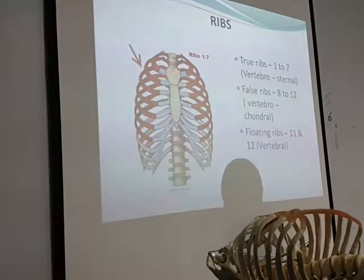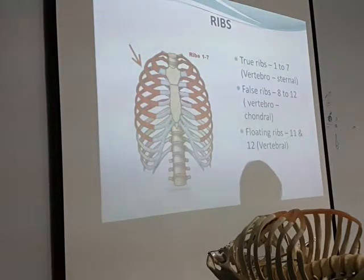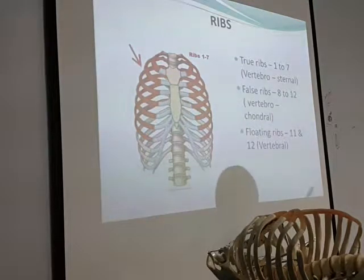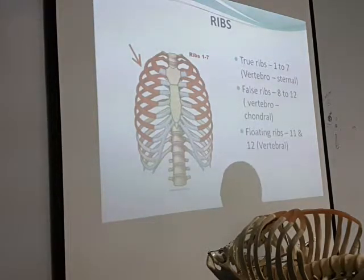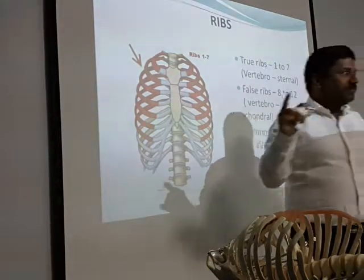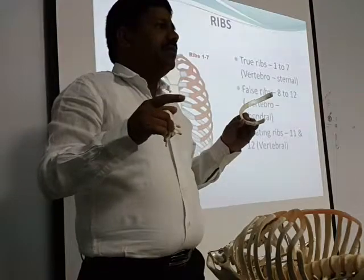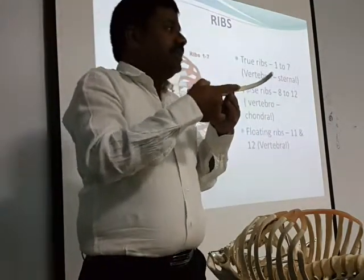For atypical ribs, such as the first and second, the head has only one facet. The first rib articulates only with T1, and the second only with T2. So unlike typical ribs, they do not articulate between two vertebrae. The tubercle still articulates with the transverse process of the corresponding vertebra.